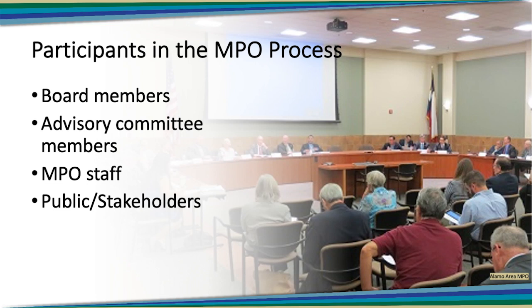Now that we know how MPOs are formed, let's discuss the key players in the MPO planning process. There are basically four categories of participants. They include board members. By federal law, they are called metropolitan planning organizations, but they are called other things across the country — some call themselves TPOs (transportation planning organizations), some TPAs (transportation planning associations), and others use local branding like MetroPlan in Little Rock, Arkansas or Metro in Portland, Oregon.